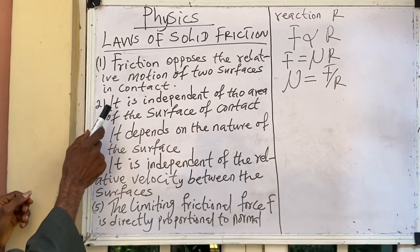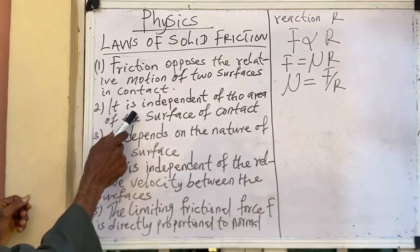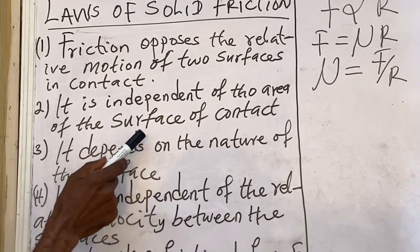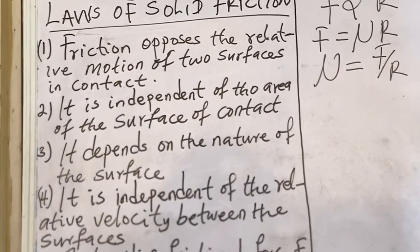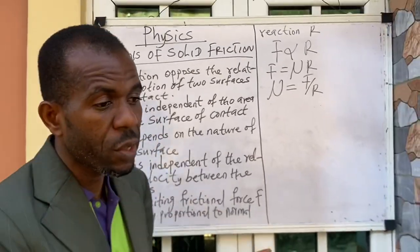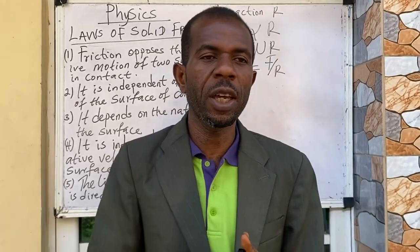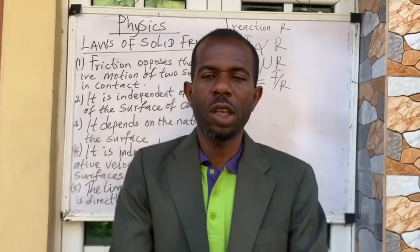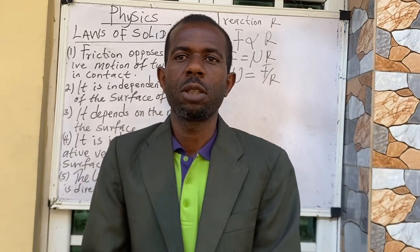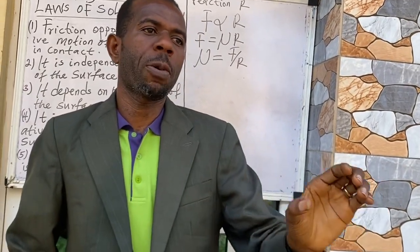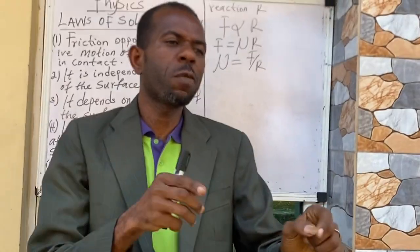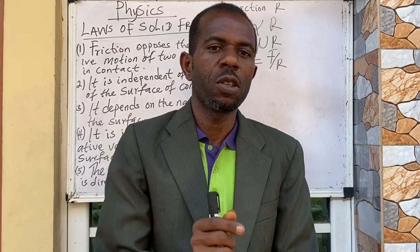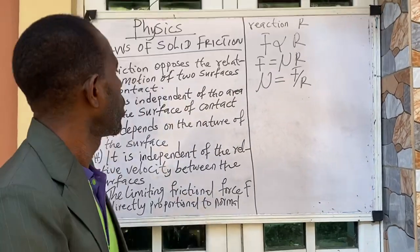Number two says it is independent of the area or the surface of contact. Friction does not depend on the area or the surface in contact. That is to say, the friction we are talking about only depends on how rough that surface is — it does not depend on the area.